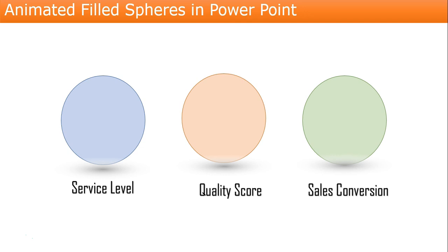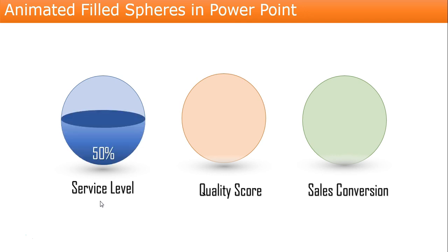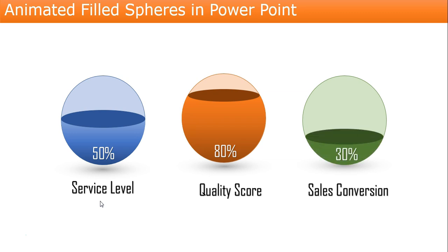As you are seeing on my screen, I have created three circles here and these are to display my service label, quality score, and sales conversion matrix. If I press the forward arrow key, my first sphere will be filled with some animation, and if I click again the second sphere will be filled, and similarly the last one. This is a very beautiful visualization and you can use this in your business review to display your metric performance or any other purpose.